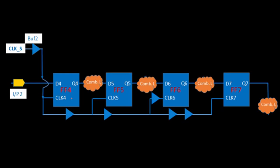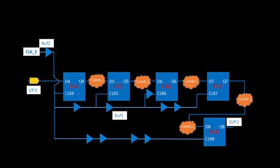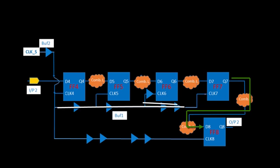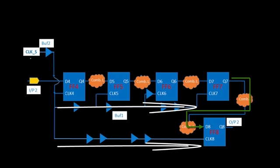That statement is correct in theory, but in a real design there are a lot of complexities. Let's move to the next complexity. I have just added one more timing path between ff7 and ff8. There is no common clock path between ff7 and ff8 — only this path. If you make any changes in the clock path from clock_s to clock7 or clock_s to clock8,